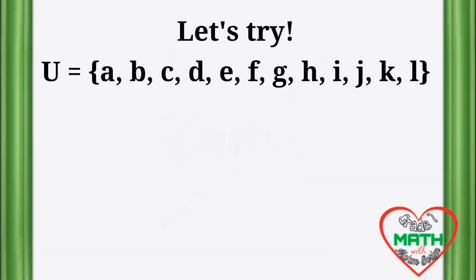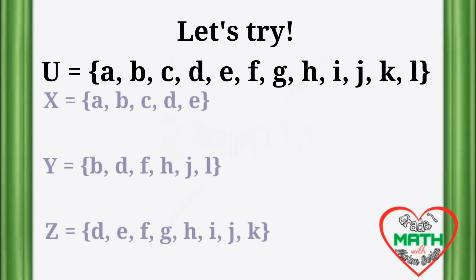Now let's try. Given the universal set U equals the elements of the first 12 letters in the English alphabet, find the complement of the following sets. I will give you 10 seconds to answer.